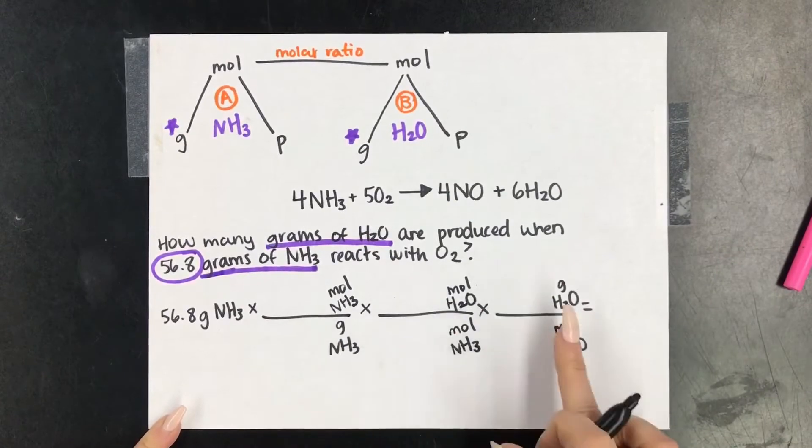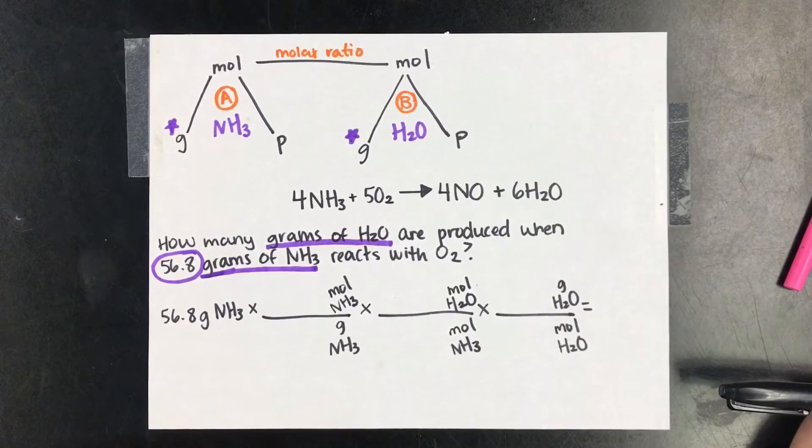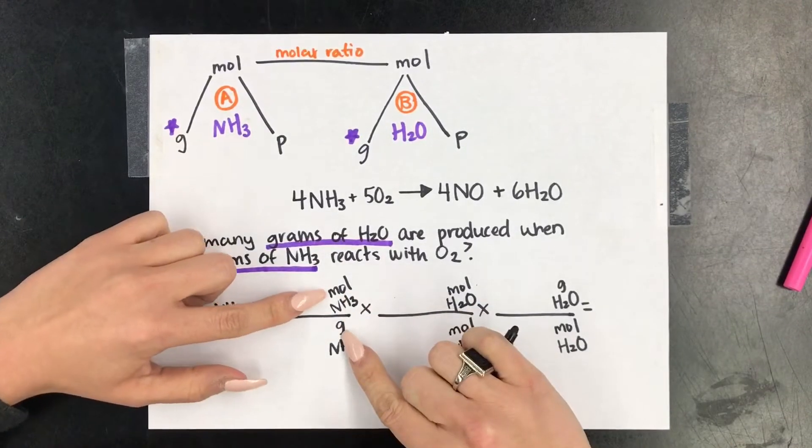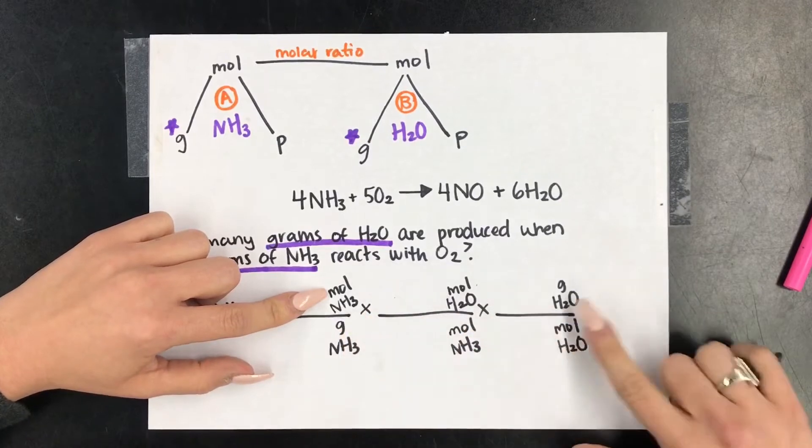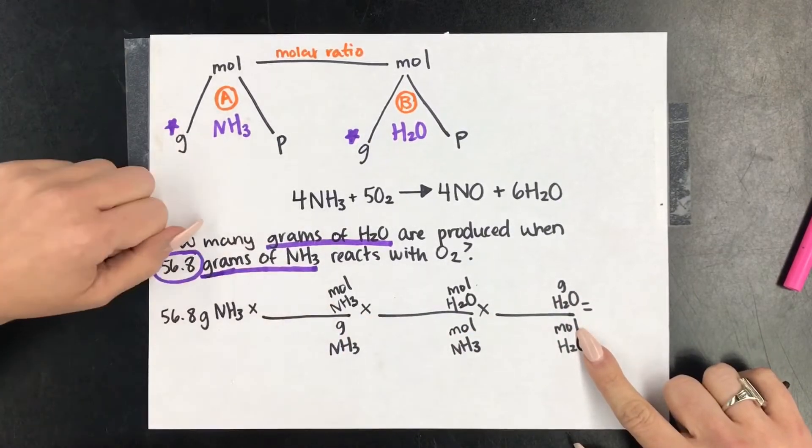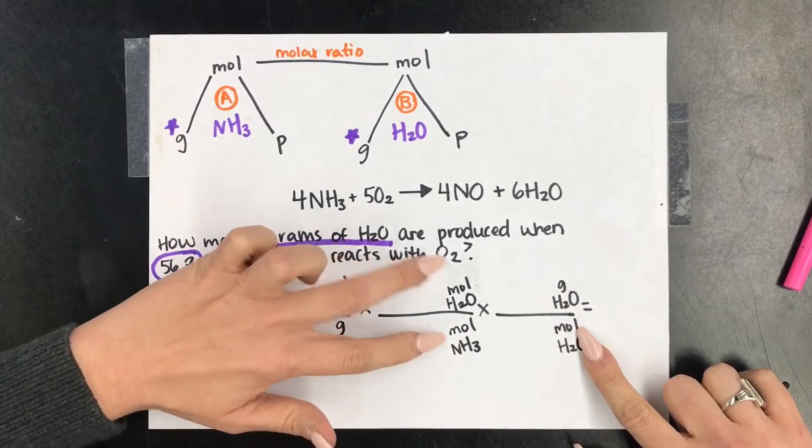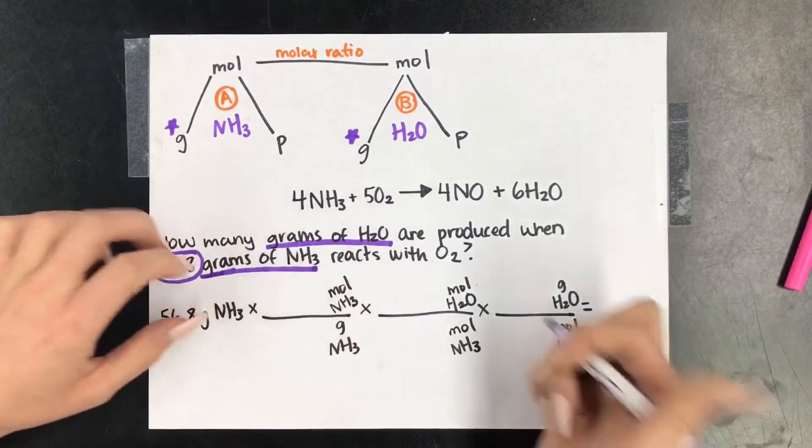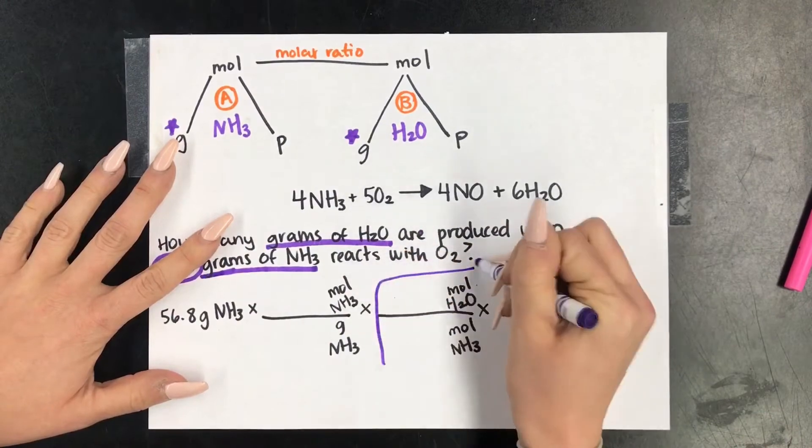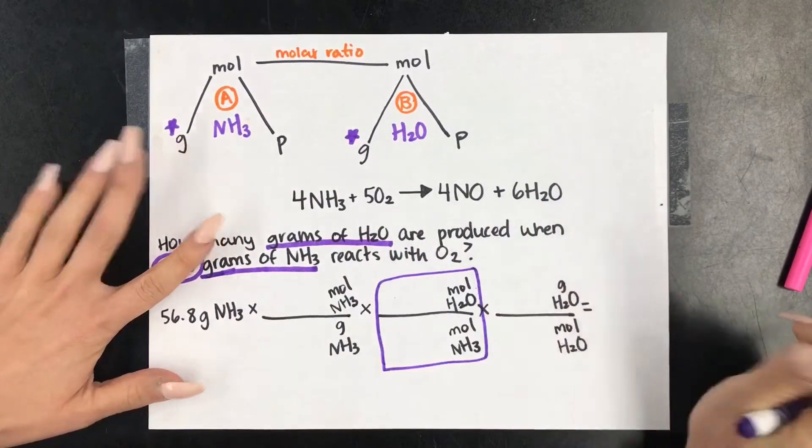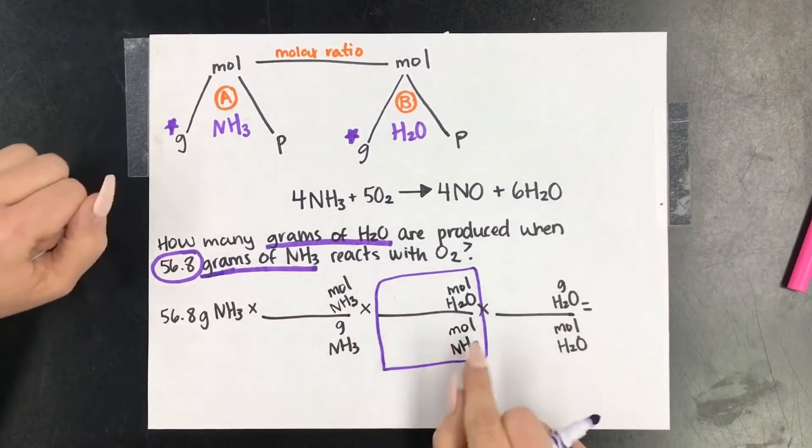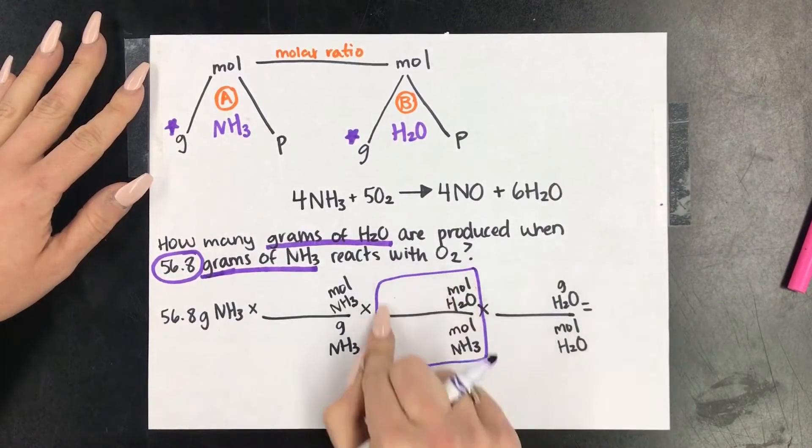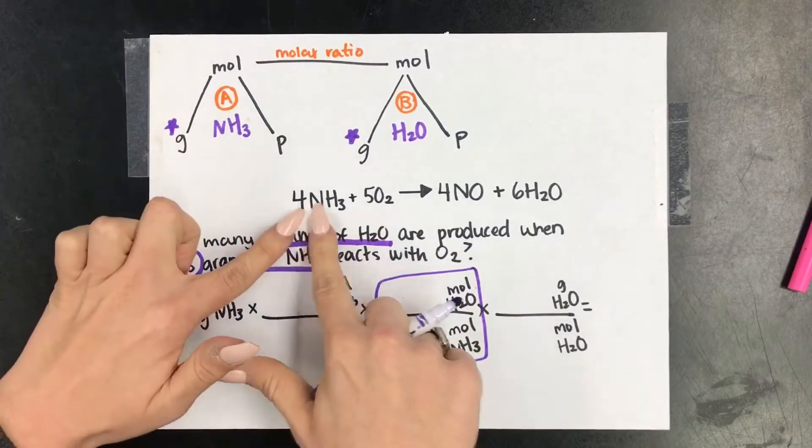So when I take a step back, my units should cancel exactly diagonally. The only unit that doesn't cancel is on top of the last conversion. Now between these three steps, we need to figure out where the molar ratio is. So if you look at the comparison of units, this is a mole to gram comparison. That is not a molar ratio. Gram to mole, not a molar ratio. But here, we have mole on top of mole. A comparison of moles, which, my friends, is a ratio.